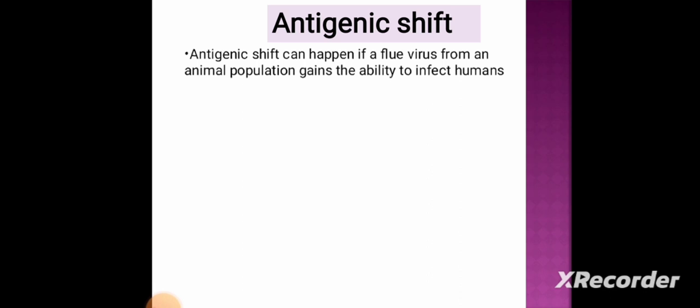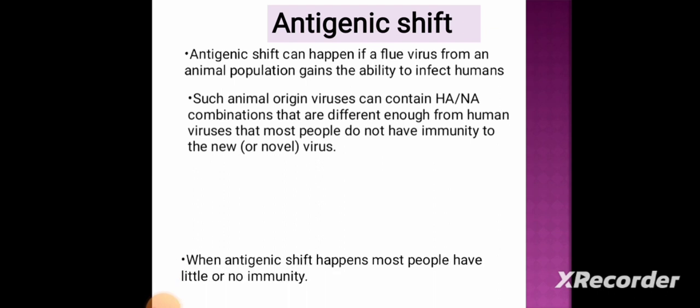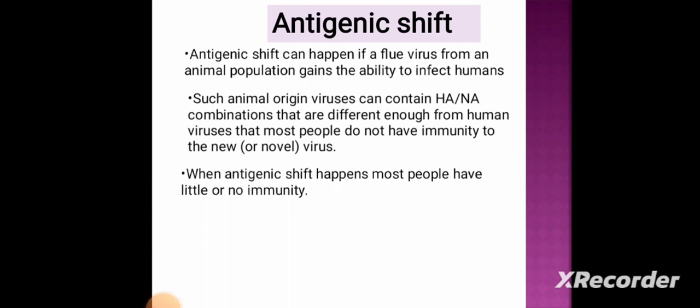Antigenic shift can happen if a flu virus from an animal population gains the ability to infect humans. Such animal-origin viruses can contain hemagglutinin or neuraminidase combinations that are different enough from human viruses that most people do not have immunity to the new virus. When antigenic shift happens, most people have little or no immunity.